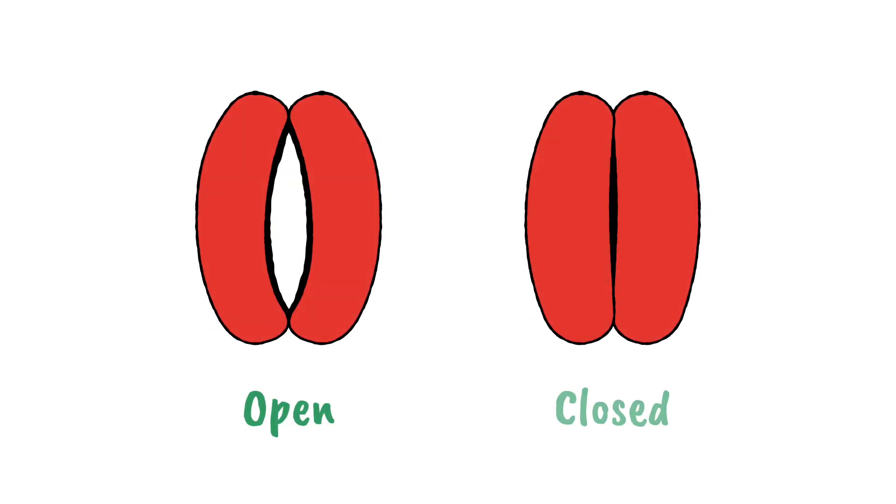These guard cells are able to change shape, and this allows plants to control when gases can and can't be exchanged by opening or closing the stomata.